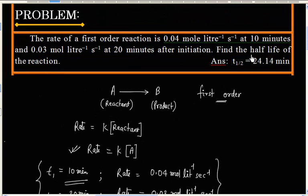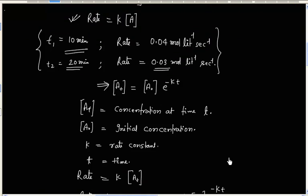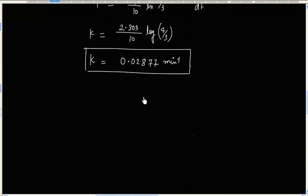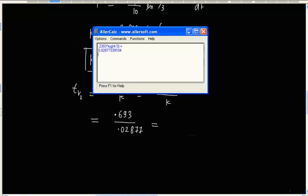We have to calculate half life. Half life is ln 2 or 0.693 by k. So either we can use ln 2 by k or 0.693 by k. k is 0.02877. So let us calculate this value.